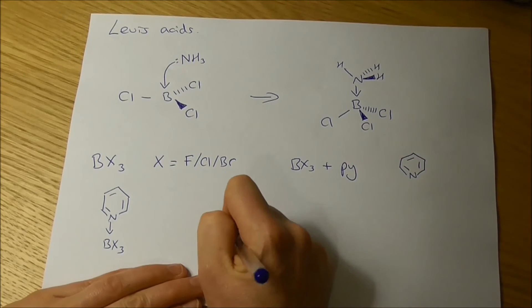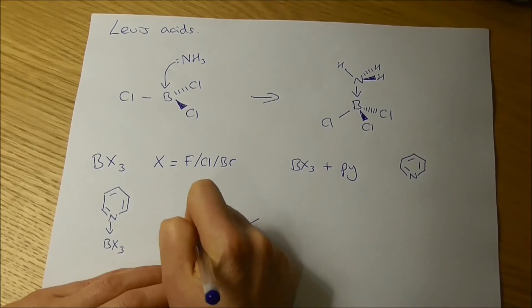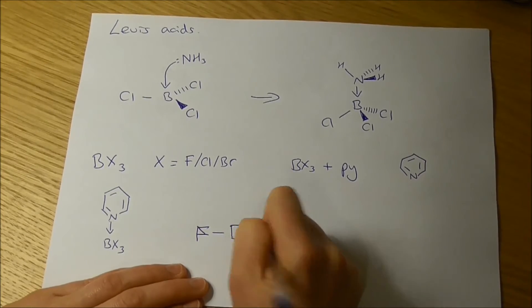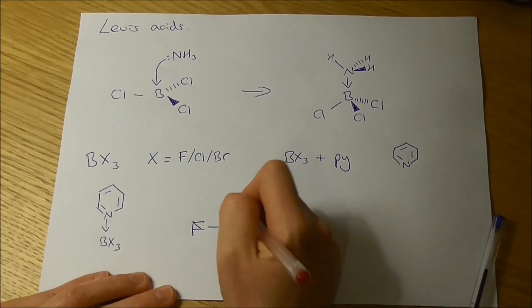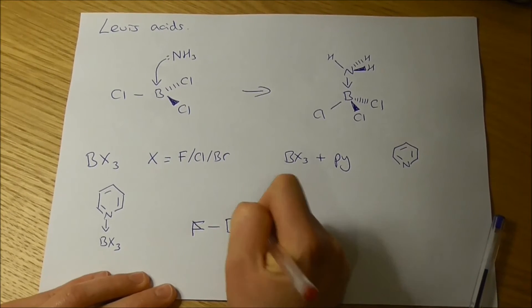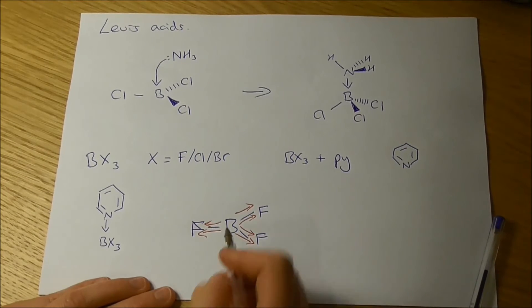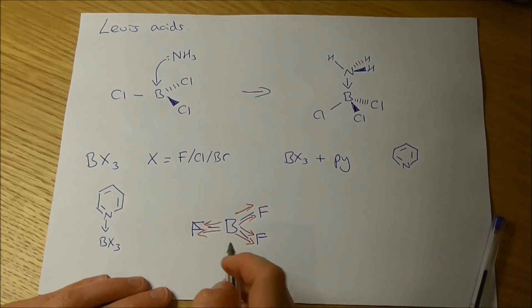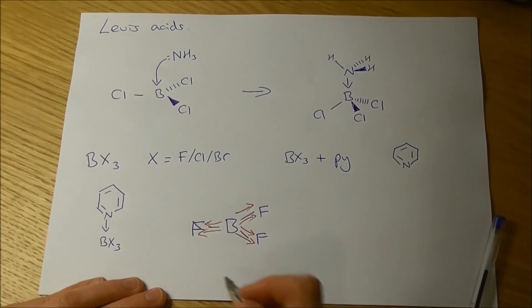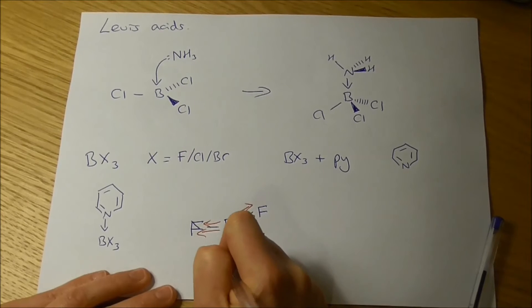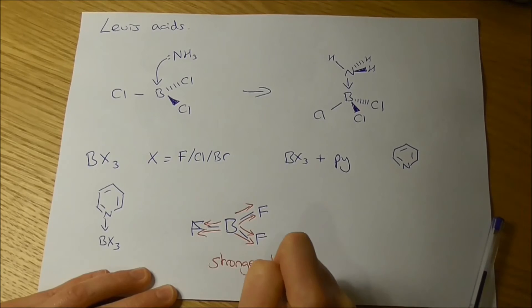And what you might expect is that if you've got a boron trifluoride species, fluorine is really electronegative, so fluorine is going to be drawing electron density away from that boron extremely strongly. If it's drawing electron density away from that boron, it's making it more electron deficient. If it's more electron deficient, then presumably it's a stronger Lewis acid.